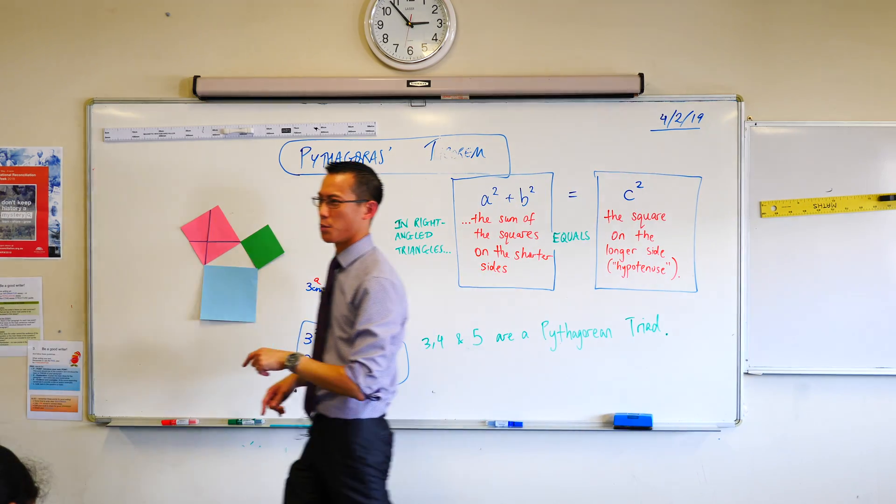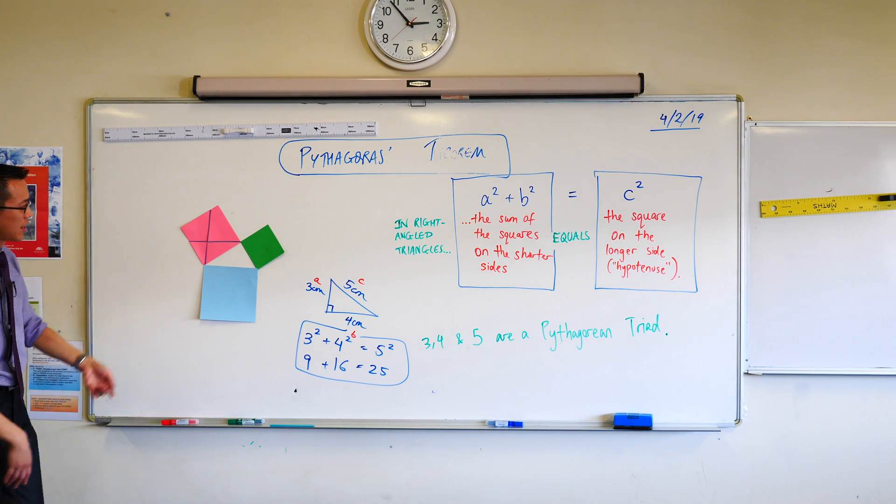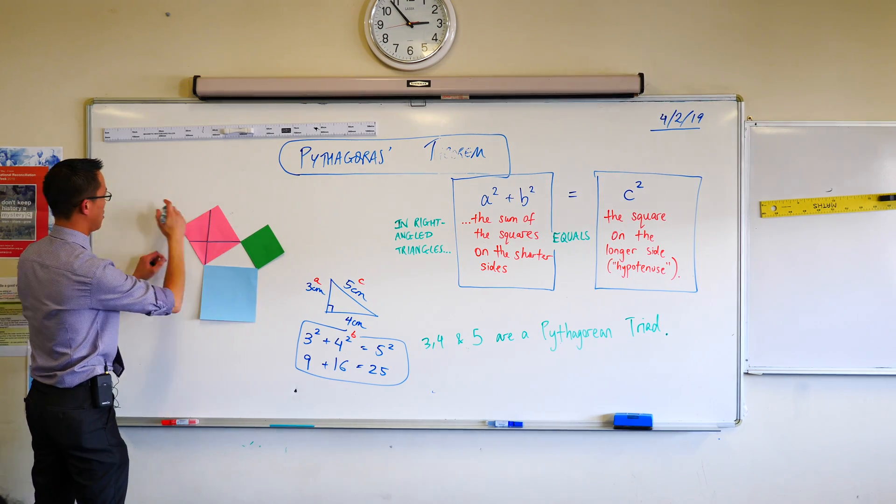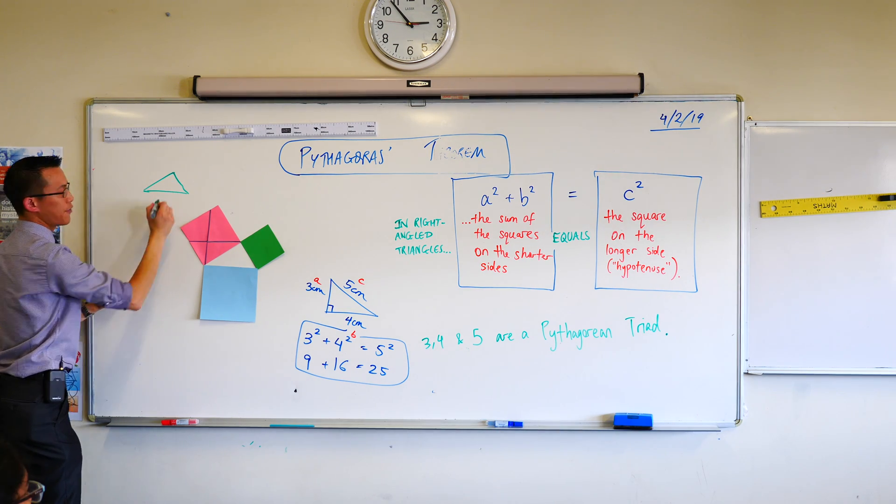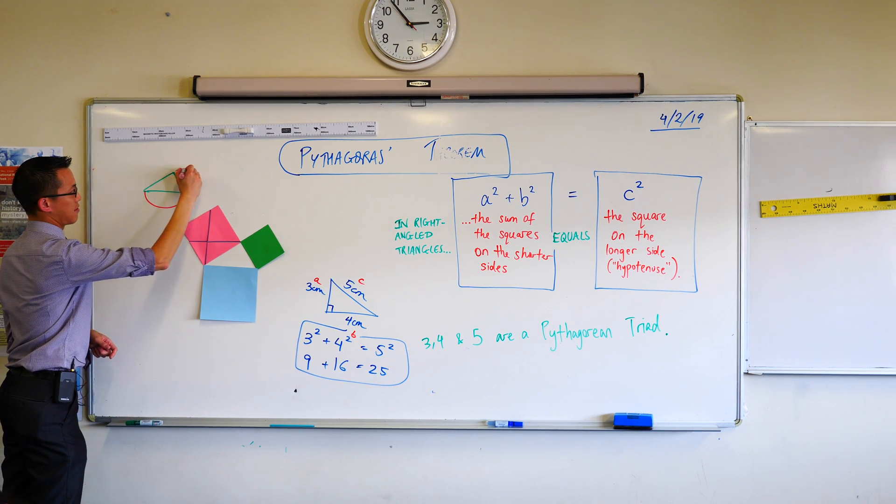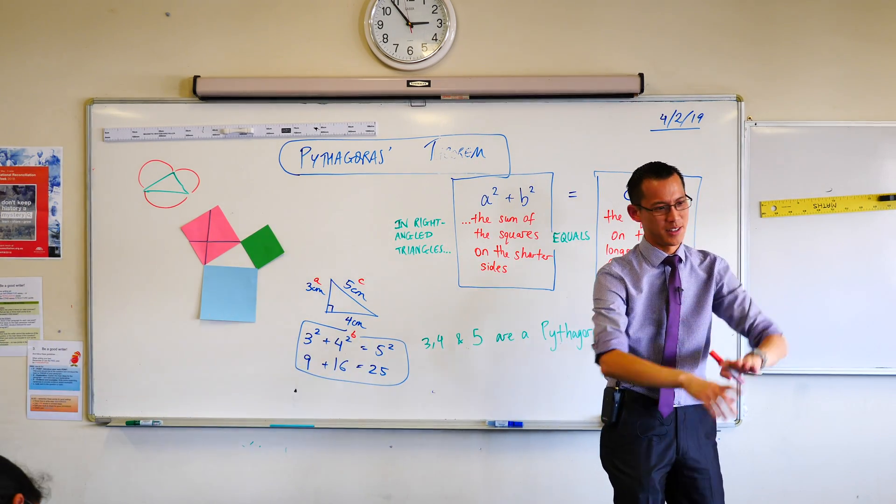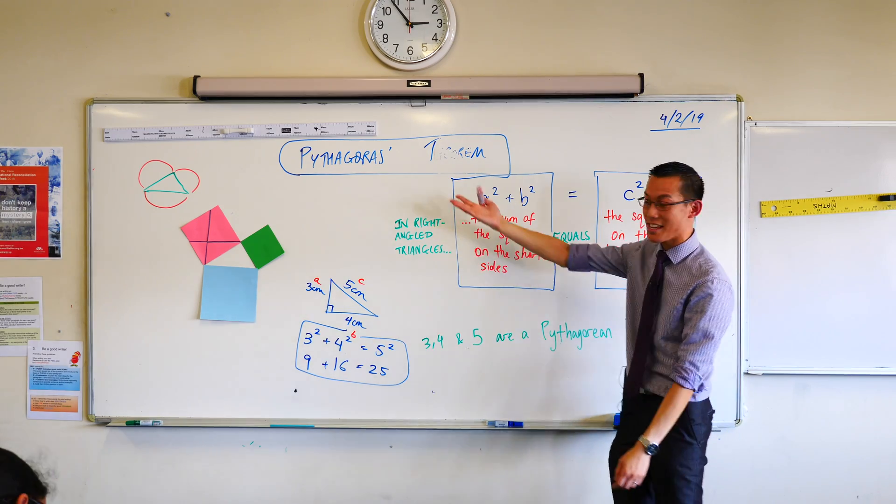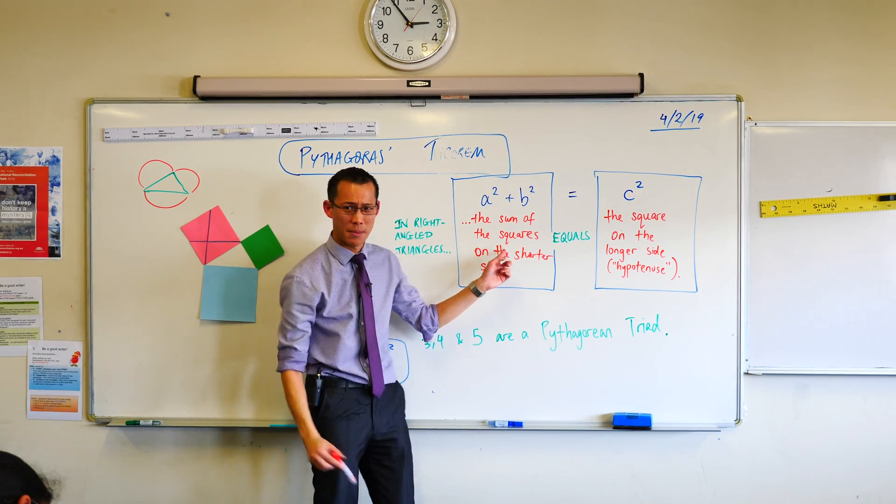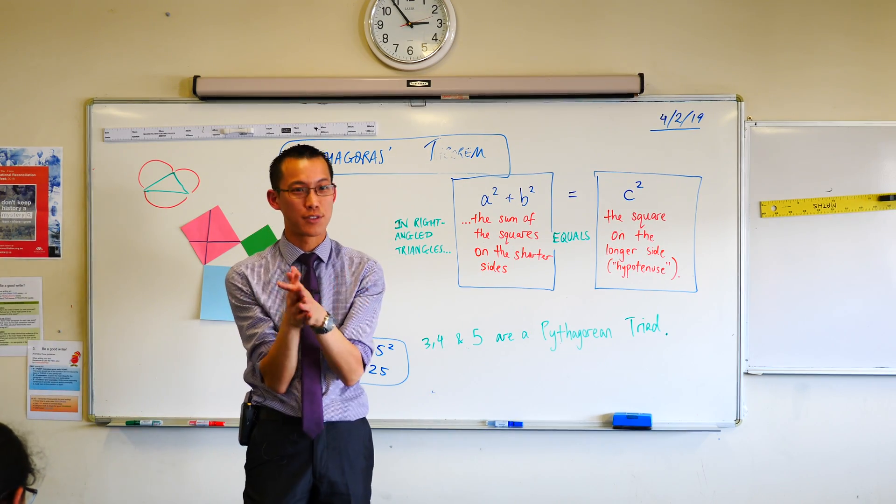For those of you who are already comfortable, you're like, no, I totally know this stuff, right? I would challenge you to see where else this can go. For example, these are squares, right? What do you think happens? Let's take these guys. No, I'm just going to leave them there. What do you think happens if instead of squares, like say, I don't know, a semicircle? Do you think that works? Don't try cutting that into pieces. That will be a nightmare. But do you think it might be true that you could add up those two semicircles and get that semicircle?